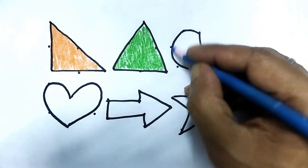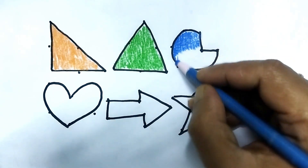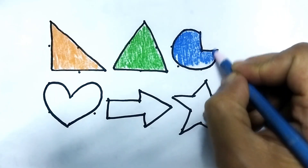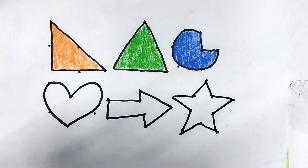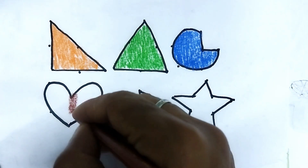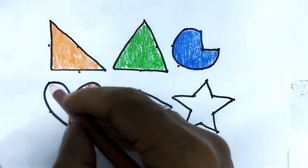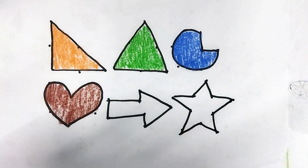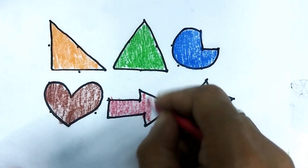This is blue color — blue color. This is chocolate color — chocolate color. This is red color — red color.